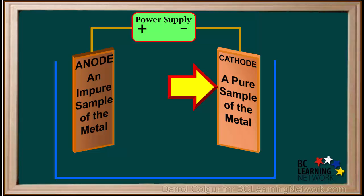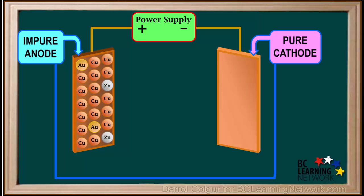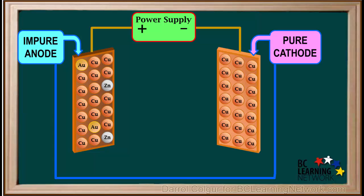In this video, we'll use the electro-refining of copper as an example. On the impure anode, we'll represent an assortment of atoms, mainly copper, but with some impurities. And on the pure cathode, we'll represent all copper atoms, as this is pure copper.